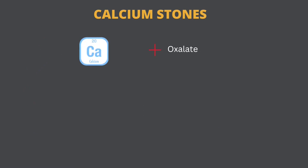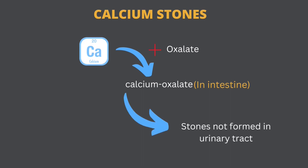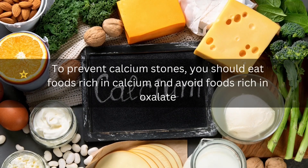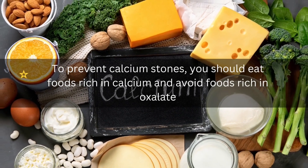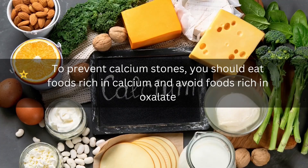In fact, a diet rich in calcium reduces the risk of kidney stones. When you eat foods rich in calcium, calcium binds with oxalates in the intestine or stomach, making it less likely to bind again in the urinary tract. Kidney stones are actually formed when calcium binds with oxalates in the urinary tract. To prevent calcium stones, you should eat foods rich in calcium and avoid foods rich in oxalates.